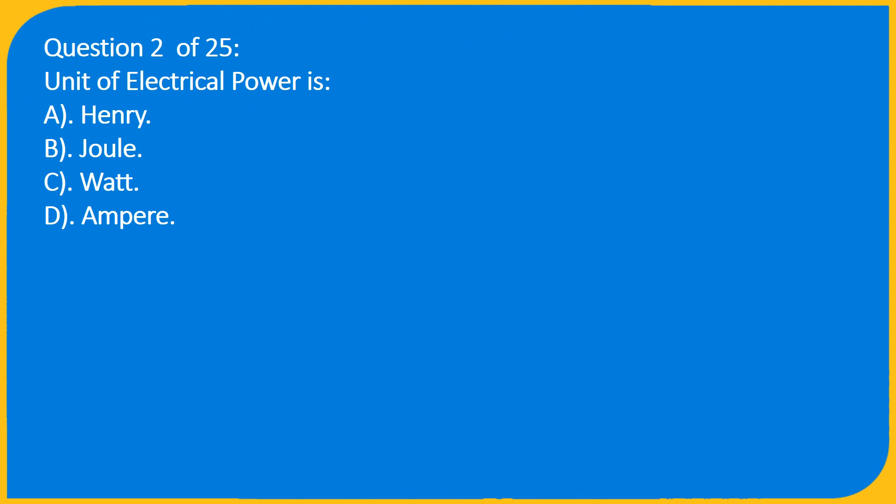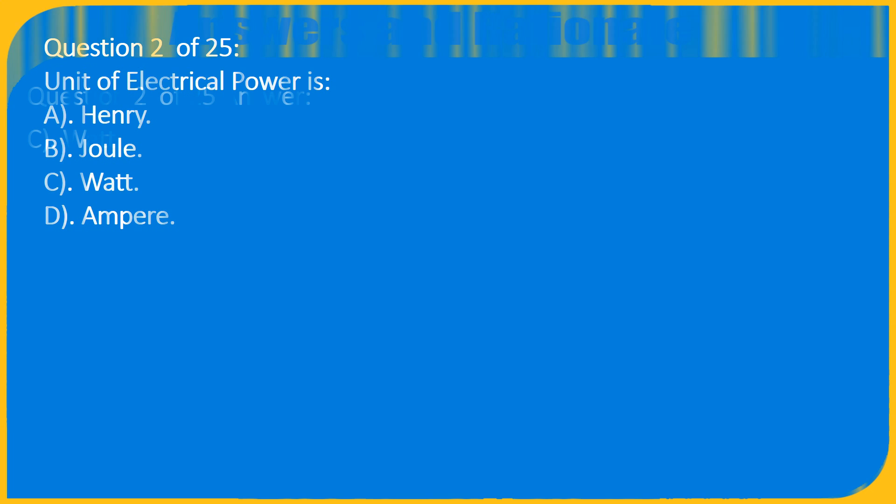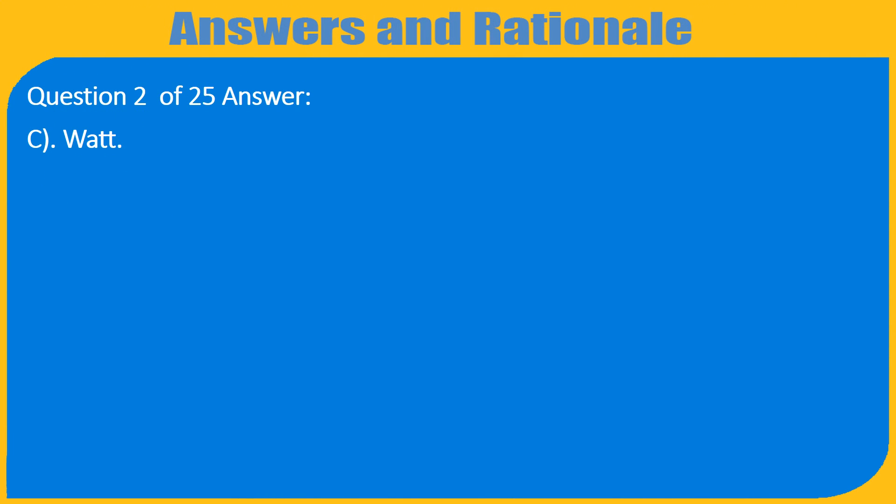Question 2 of 25: Unit of Electrical Power is — A. Henry, B. Joule, C. Watt, D. Ampere. Answer: C. Watt.